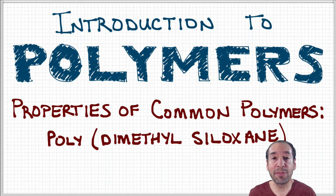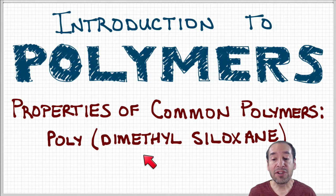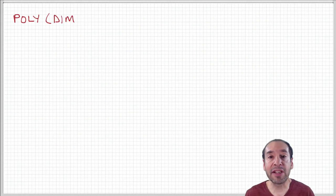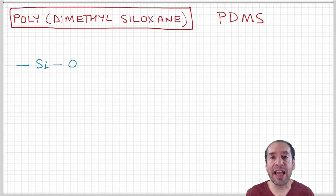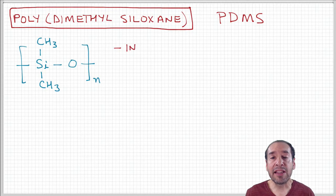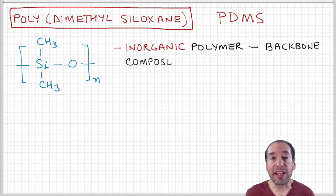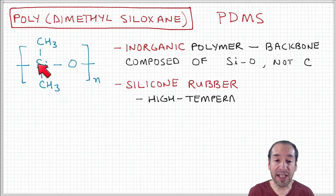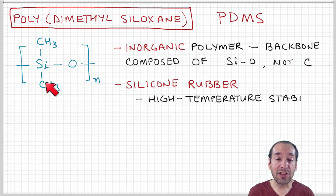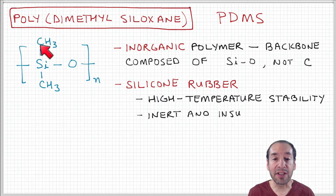Another material I'd like to talk about is polydimethylsiloxane, or PDMS. This material is important because up until now, we've considered only polymers that have carbon atoms on the backbone — so-called organic polymers. PDMS is an example of an inorganic polymer because it contains atoms other than carbon on the backbone: in this case silicon and oxygen. You have this Si-O linkage and then two methyl groups that come off on the side of the silicon — this is the dimethyl part of the structure.